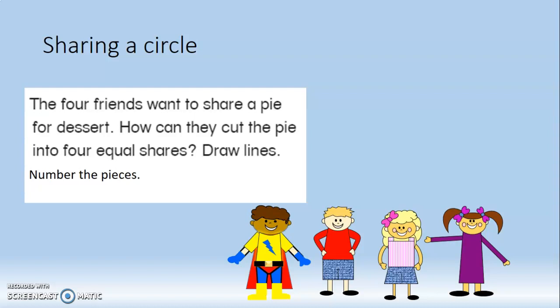The four friends want to share a pie. What shape is a pie? A circle. Now we will do sharing a circle. The four friends want to share a pie for dessert. How can they cut the pie into four equal shares? Draw lines, number the pieces.